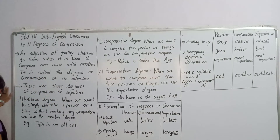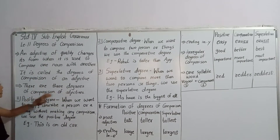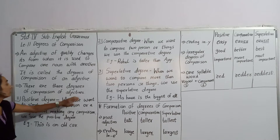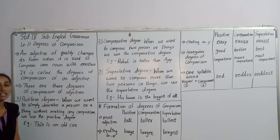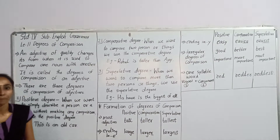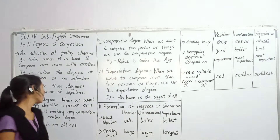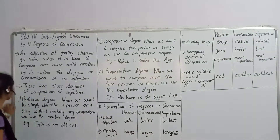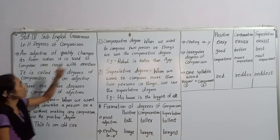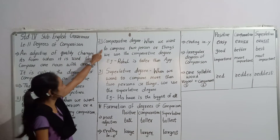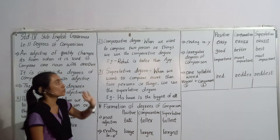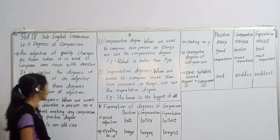Now there are three degrees of comparison of an adjective. Teen degrees hain: first hai positive degree, second hai comparative degree, and third hai superlative degree.